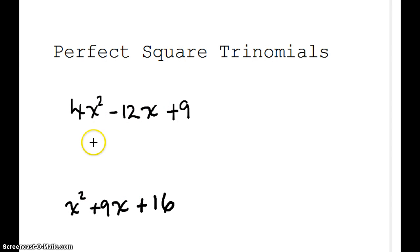So, perfect square trinomial. Is it a perfect square? Well, the square root of 4x squared is 2x. The square root of 9 is 3, or negative 3. And then I'm going to do 2 times 3 is 6. 6 times 2 is 12. Perfect square trinomial.